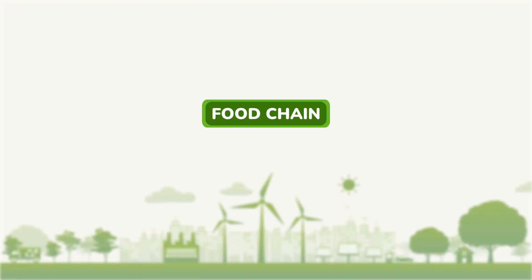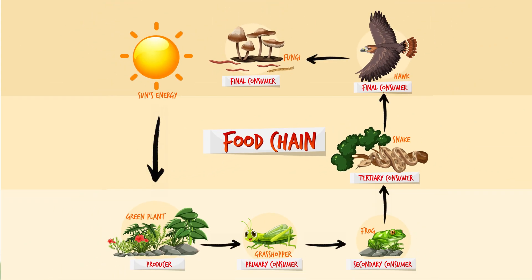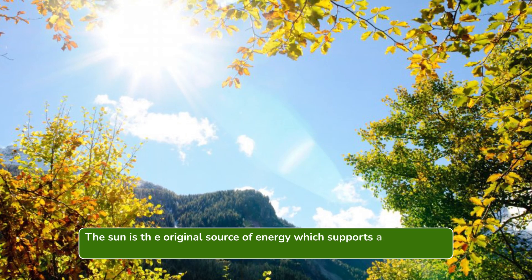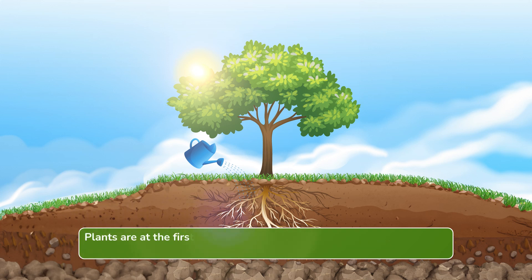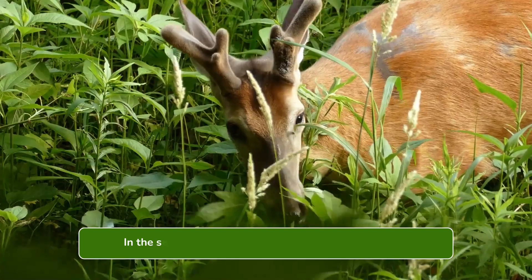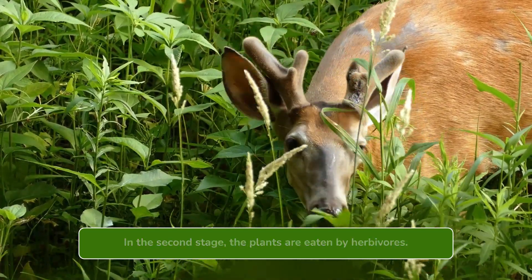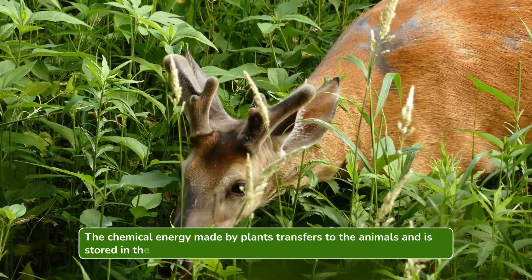Food chain. Food chain is the transfer of energy from one organism to another. The sun is the original source of energy which supports all kinds of life on the earth. Plants convert solar energy into chemical energy. Plants are at the first stage of the food chain and make their own food, therefore they are called producers. In the second stage, the plants are eaten by herbivores. The chemical energy made by plants transfers to the animals and is stored in their cells.